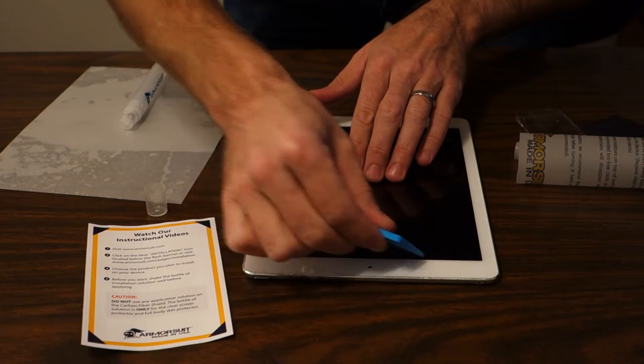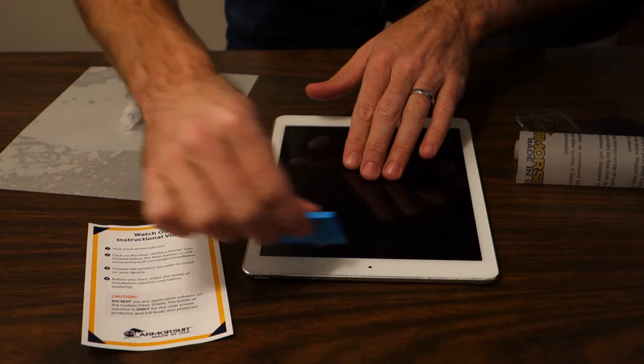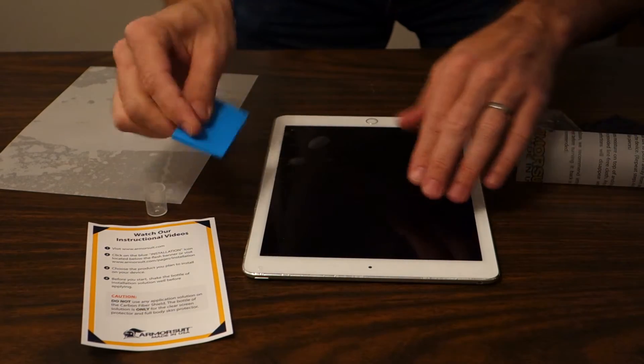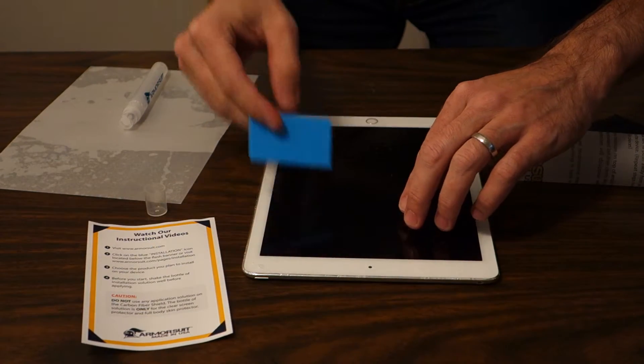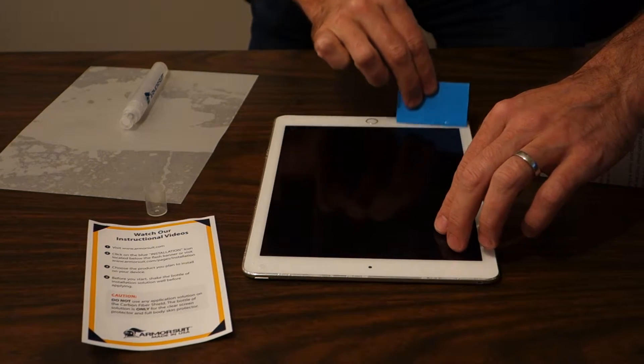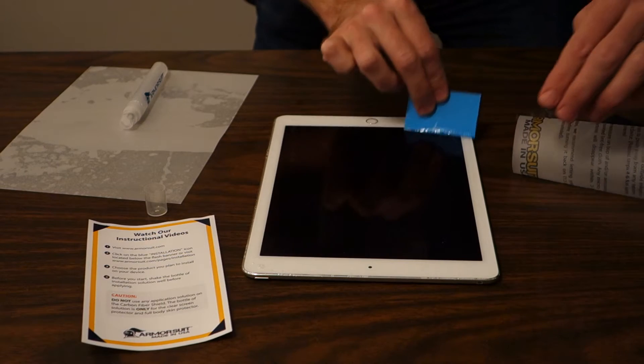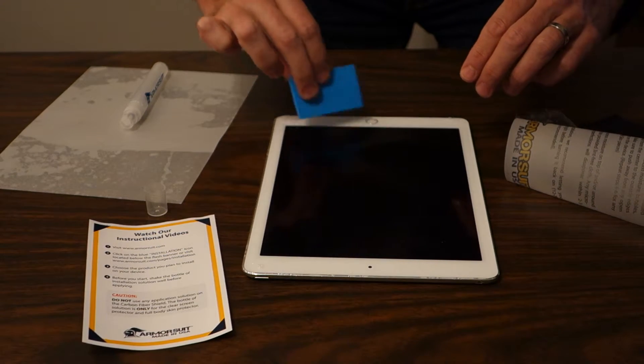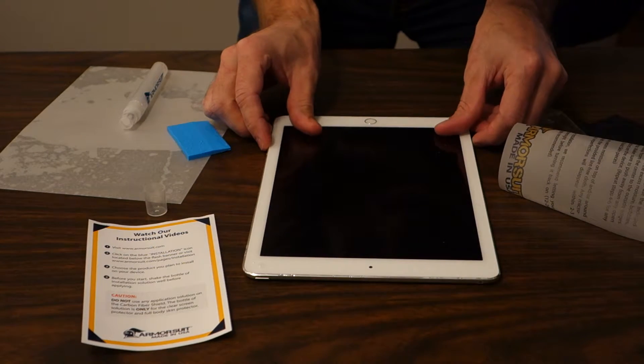And now I'm squeegeeing out the bubbles here. It says to squeegee out the bubbles, then check to reposition, and I think maybe squeegee again. And it's shifted here.